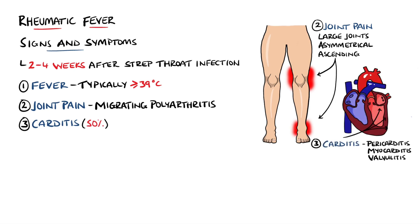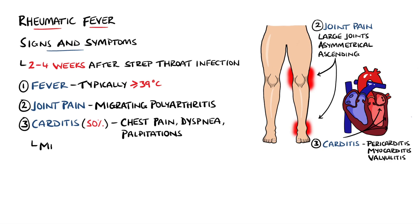Carditis includes pericarditis, myocarditis, or valvulitis. Collectively, these may present as chest pain, shortness of breath, or palpitations. Damage to the valves is not common in the first attack and is more associated with repeat attacks. Insults to the valves can lead to dysfunction, most commonly mitral regurgitation.